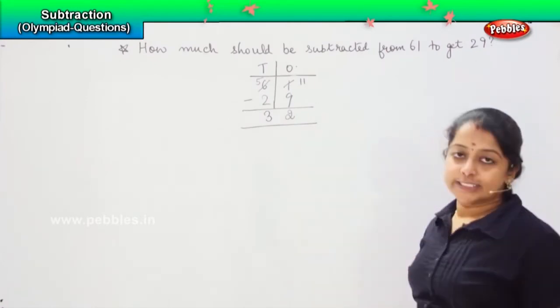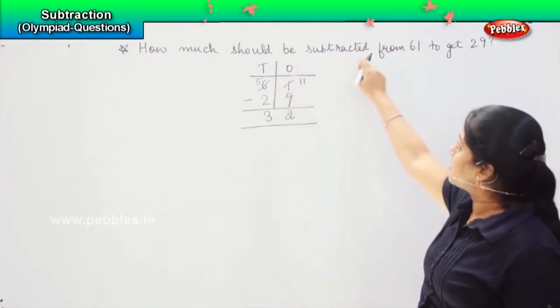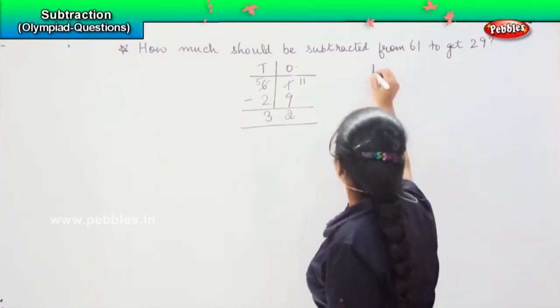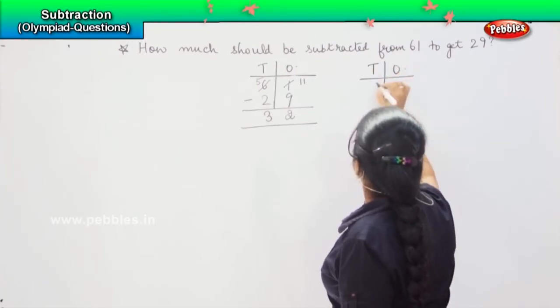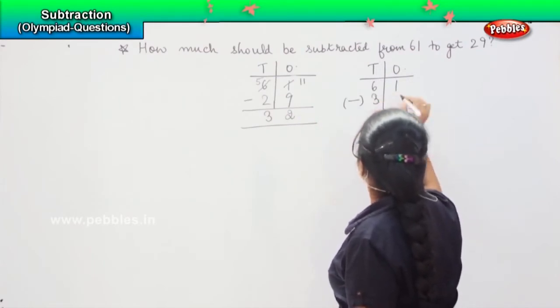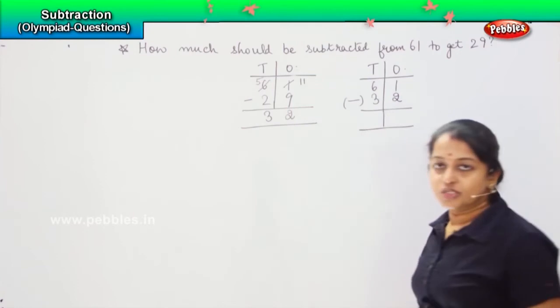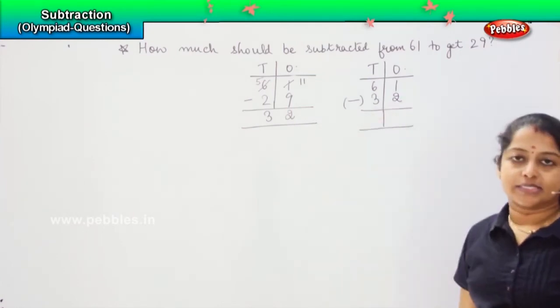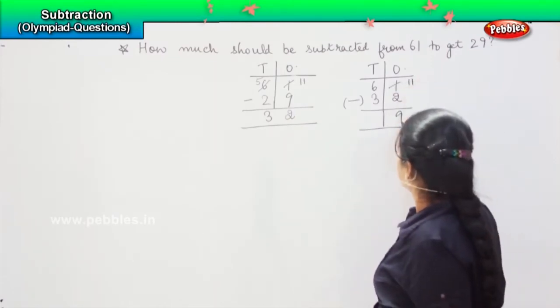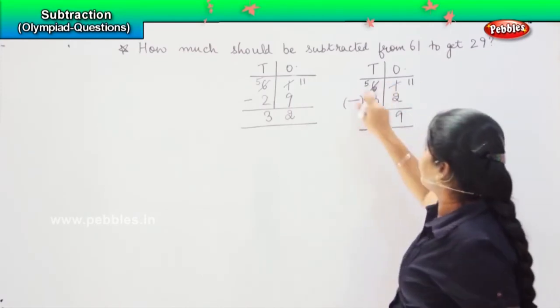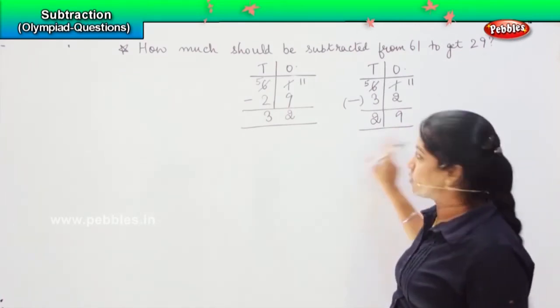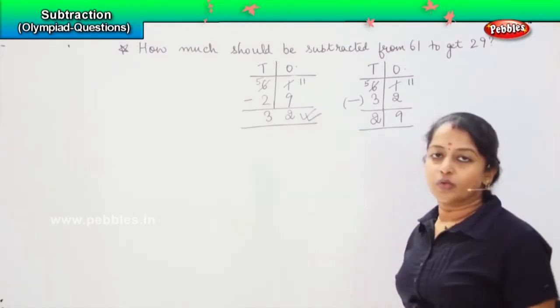In order to check whether this answer is correct or not, the question says that how much should be subtracted from 61 to get 29, which means it will be 29. So, shall we try this subtraction? So, 61 minus my answer 32. Let me see if I am getting the answer 29. If I get this answer, which means that my answer is correct. So, again 11, 11 minus 2 is 9. Then this will reduce by 1. So, 5 minus 3 is 2. So, am I getting this answer? Yes. So, which means my this answer is the right one.